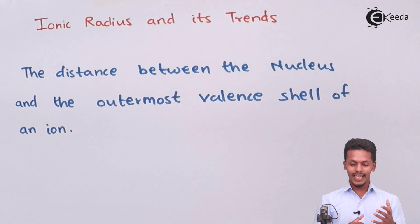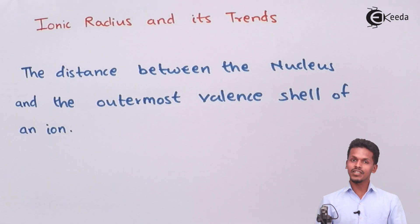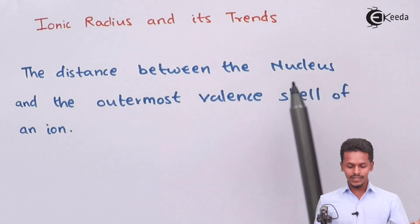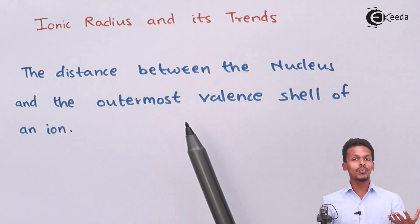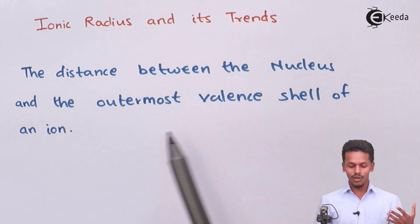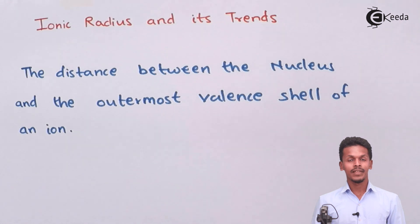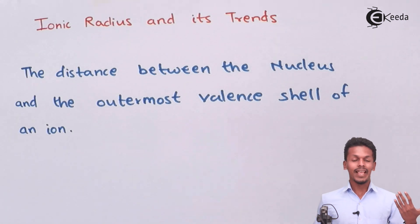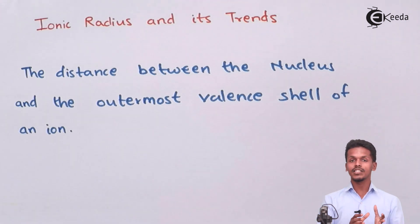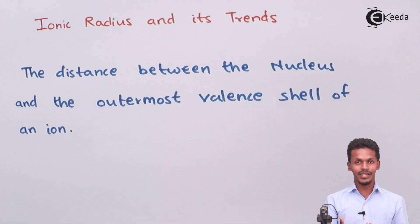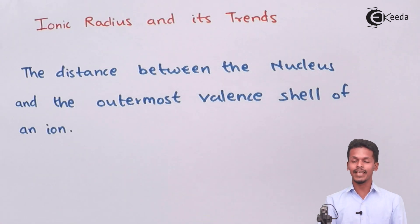Let us see what ionic radius actually is. As mentioned earlier, it is the distance between the nucleus and the outermost valence shell of an ion. Ions are distributed into two parts — one is cation and one is anion.